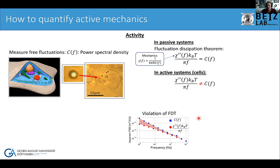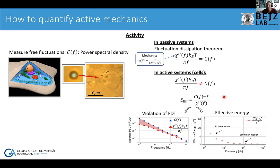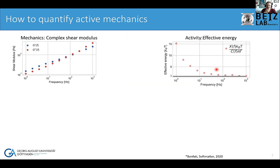To quantify the energy pumped into the system, we divide the upper curve by the lower curve. Mathematically, we replace kT — the passive thermal energy — with what we call an effective energy. This gives us, in units of kBT, an energy pumped into the system as a function of frequency. At high frequencies (hundreds of hertz), the system is dominated by Brownian motion at around 1 kT. At lower frequencies, more energy is pumped in by active processes.